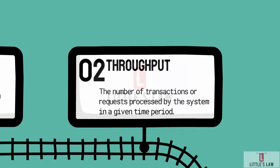The second metric is throughput. Throughput is the number of transactions or requests processed by the system in a given period. The metric throughput indicates the capacity of the system to handle a high volume of transactions, which is crucial for understanding how well the application scales under load.